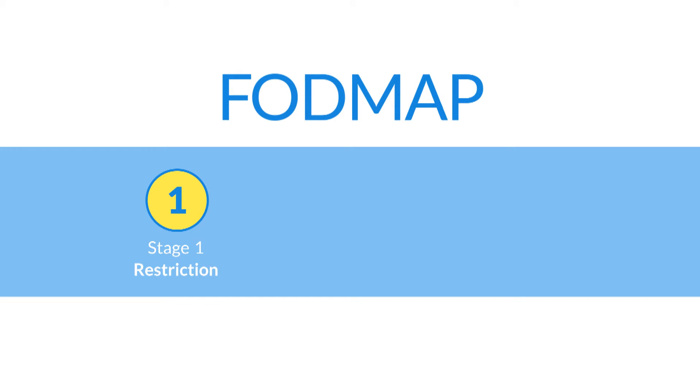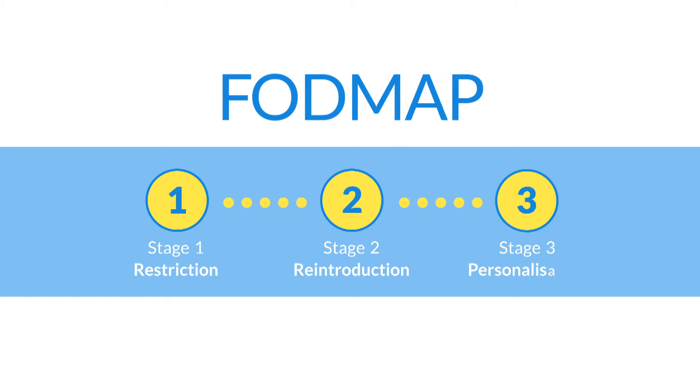There are three stages to the low FODMAP diet: stage one is FODMAP restriction, stage two is FODMAP reintroduction, and stage three is FODMAP personalisation. Research has proved that people can improve their symptoms if they follow the low FODMAP diet.